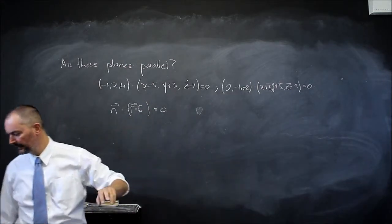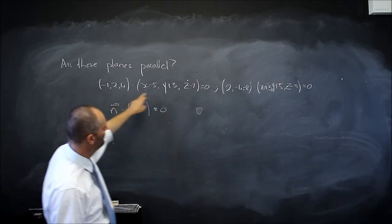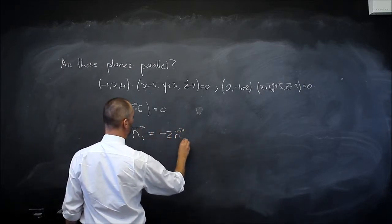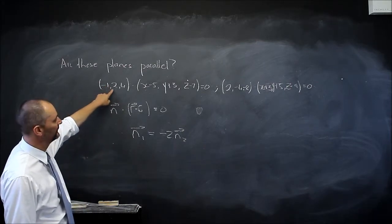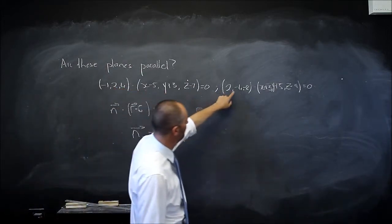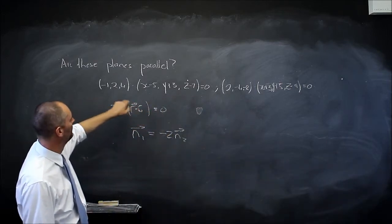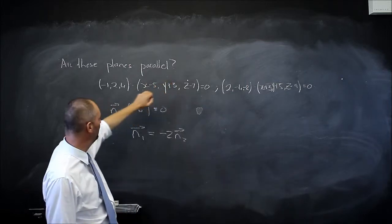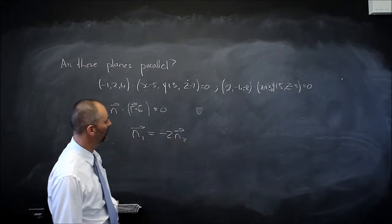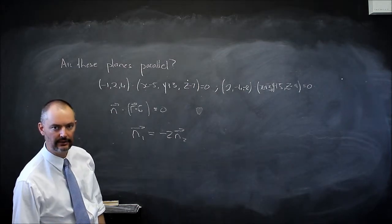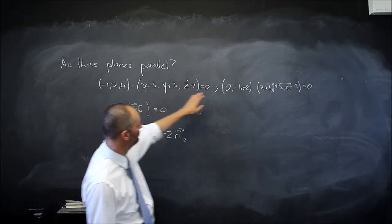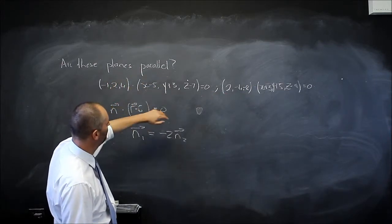If I just look at these two vectors, vector n₁ is clearly negative 2 times vector n₂, because negative 2 times (-1) is 2, negative 2 times 2 is -4, and negative 2 times 4 is -8. So the two vectors to which these planes are perpendicular — meaning their dot product equals zero — if this vector is just a scalar multiple of the other one, then they point in the same direction; they are just different lengths, meaning they are parallel to each other. So you don't have to do the dot product or anything — these two are indeed parallel to each other.